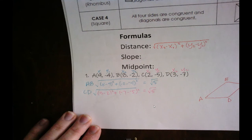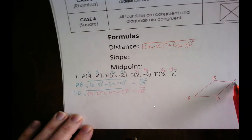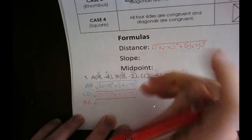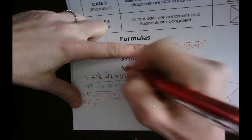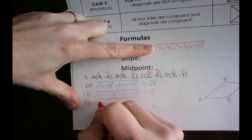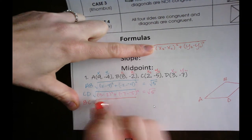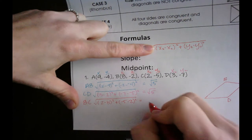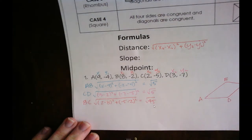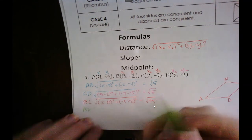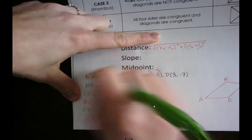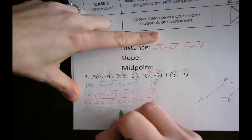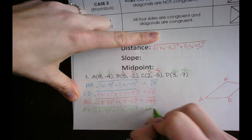Now let's check our other sides: B to C and A to D. For B to C, with x₁, y₁, x₂, y₂, we get the square root of (2 minus 8) squared plus (negative 5 minus 2) squared, which gives us the square root of 45. For A to D, we get the square root of (3 minus 9) squared plus (negative 7 minus negative 4) squared, which also gives us the square root of 45.